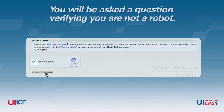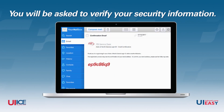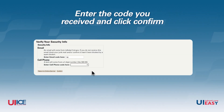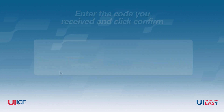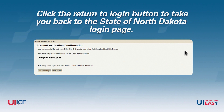After clicking the Create Account button, you'll be asked to verify your security information. You will receive a code at either the email address you entered, or as a text message if you entered your cell phone number. Enter the code you received and click Confirm. After you have successfully entered the security code, you will receive a message confirming your account activation. Click the Return to Login button to take you back to the State of North Dakota login page.